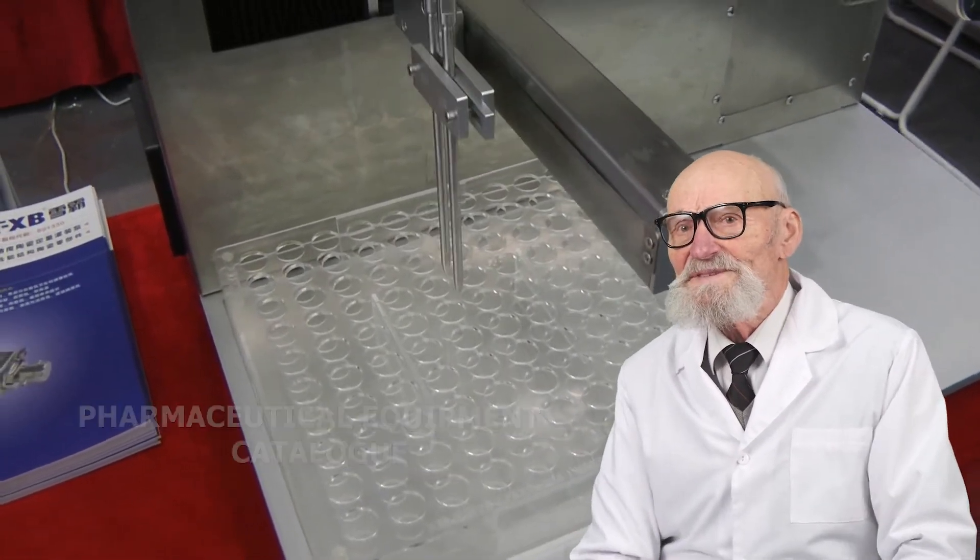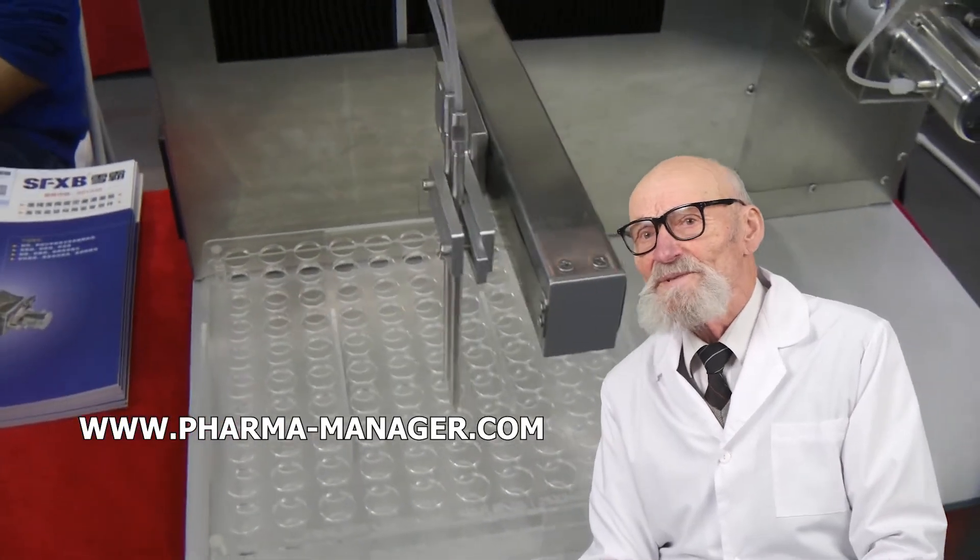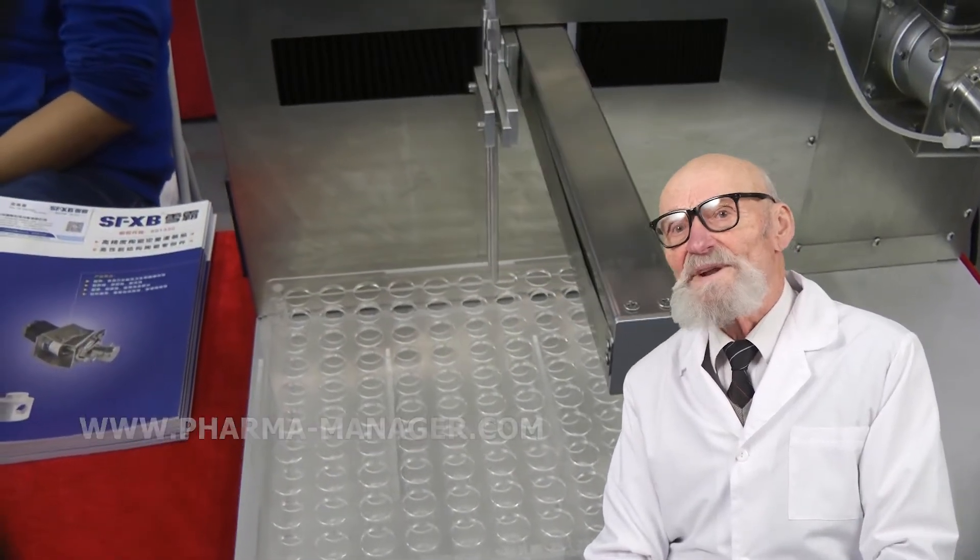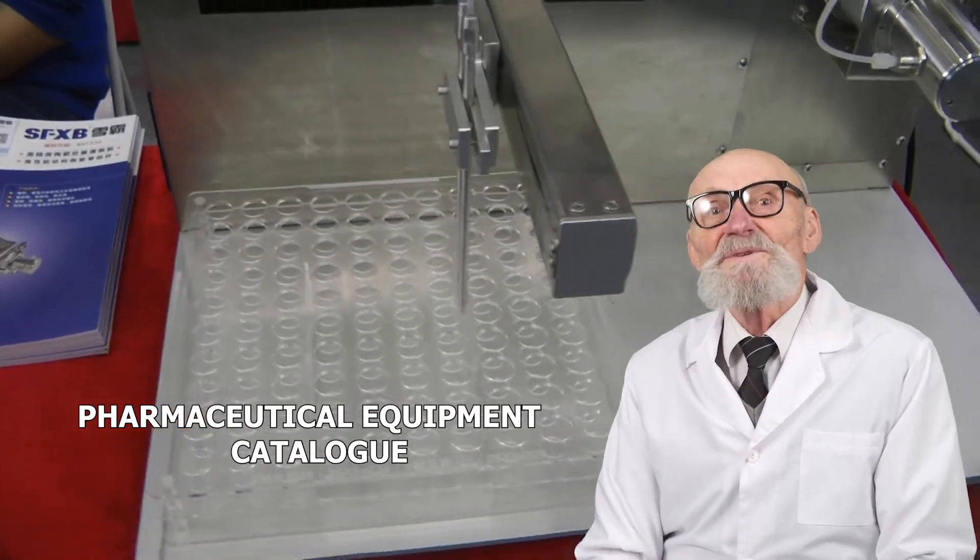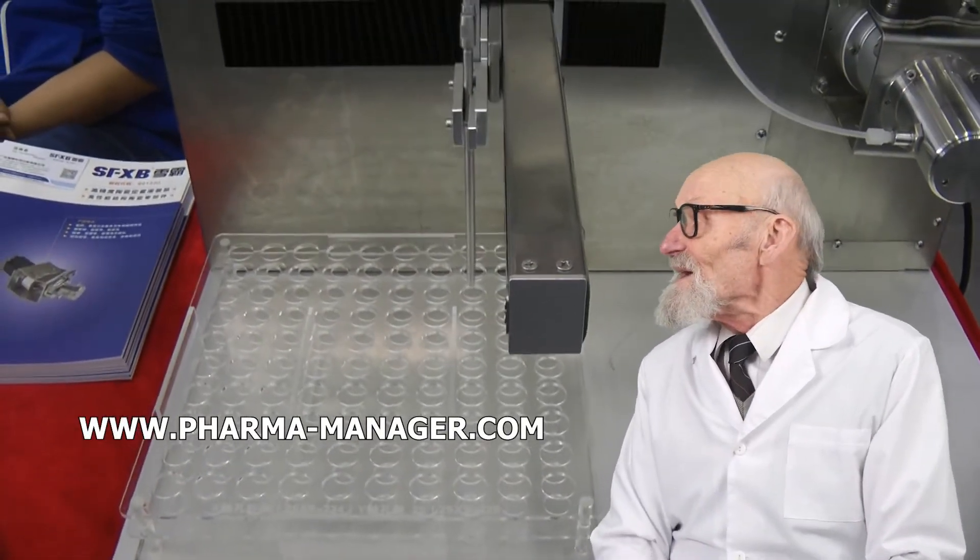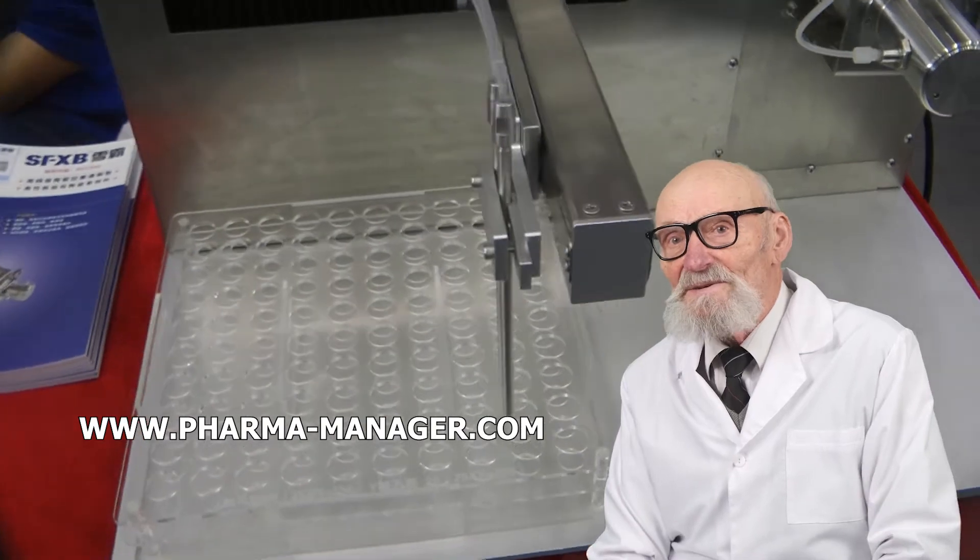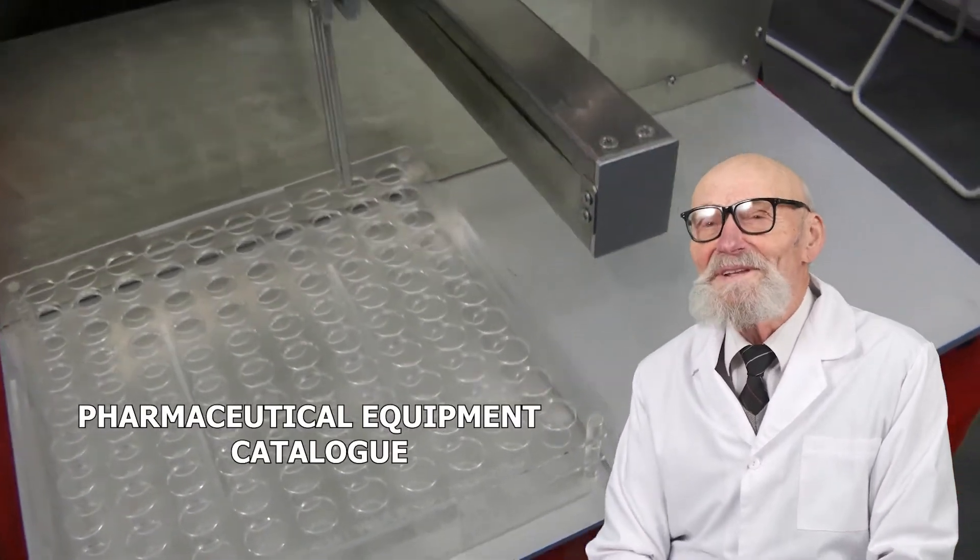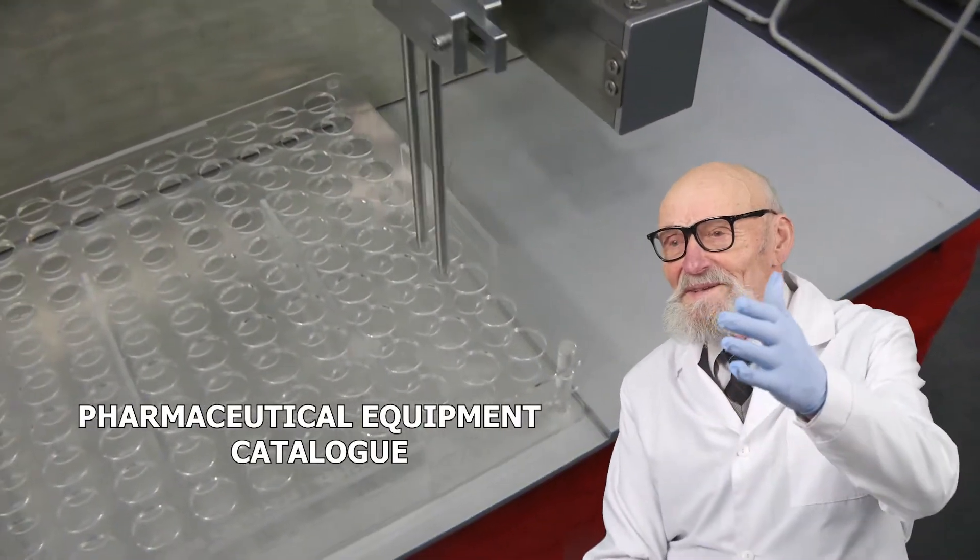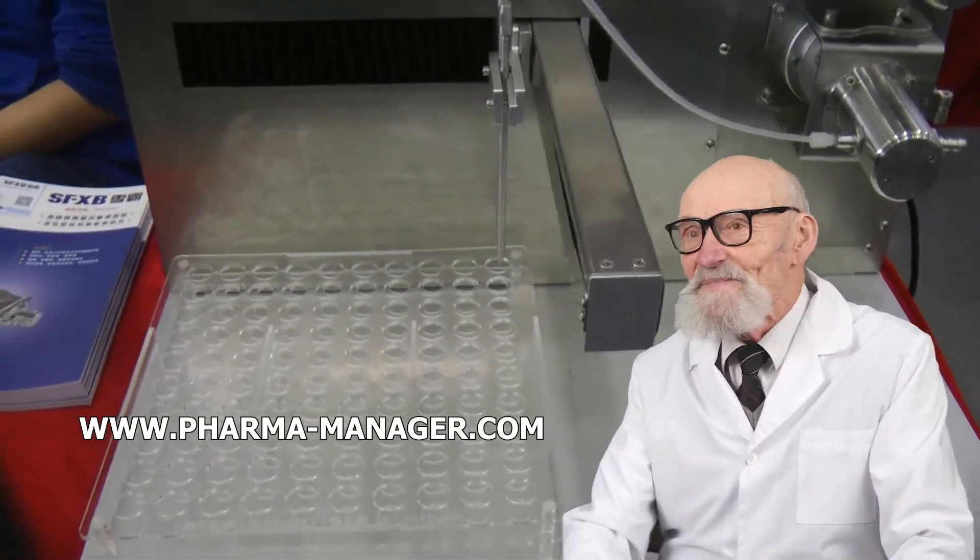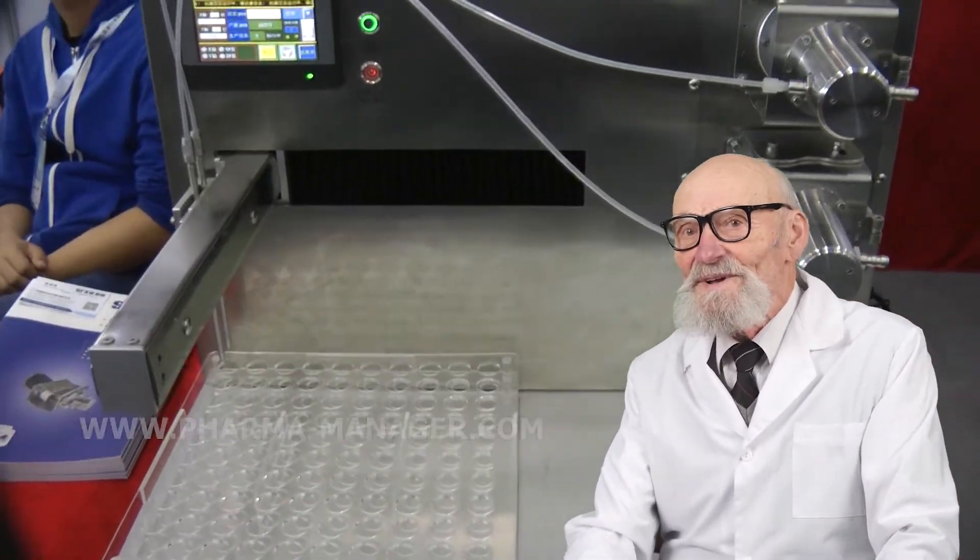In my catalogue www.pharmamanager.com you can find the whole range of equipment I am dealing with. The site has two versions, Russian and English, however equipment prices are the same in both versions. The prices in the catalogue are displayed without the cost of delivery and customs duties in Russia.